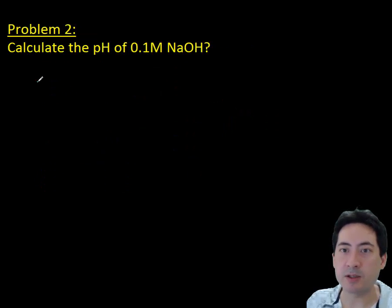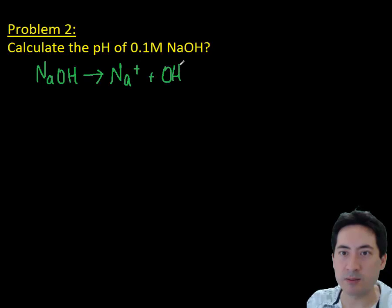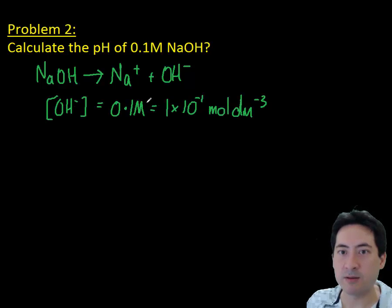Another problem here. Calculate the pH of 0.1 molar sodium hydroxide. So similarly, we just double check that it completely dissociates. We write out the formula for that and there we have the OH.